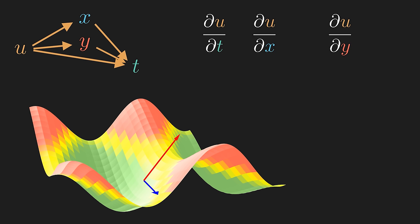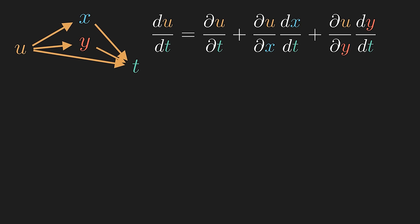Now, there is an eventual total dependence with respect to t. So we can take the total derivative of u with respect to t, which has three paths leading to it. Now what does du/dt physically mean?